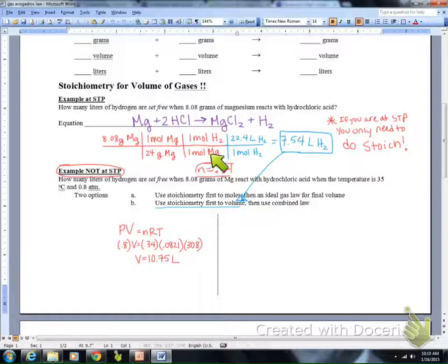First we're going to do our stoichiometry to volume, knowing one mole of hydrogen is 22.4 liters, so we're back to our 7.54 liters. Then we're going to use our combined gas law, which is P1V1T2 equals P2V2T1.